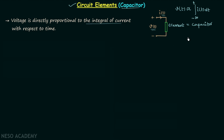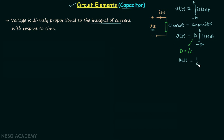This is one important property of the capacitor. When we remove the proportionality sign we have V(t) = D times the integration from minus infinity to t of I(t) dt, where D is equal to 1 over C, and C is known as capacitance. Therefore we can write V(t) = (1/C) times the integration from minus infinity to t of I(t) dt.